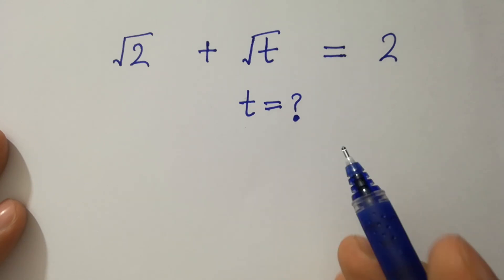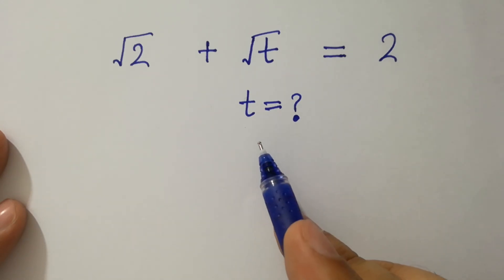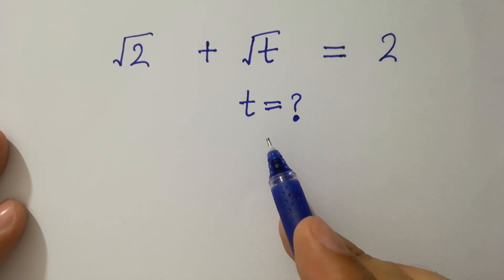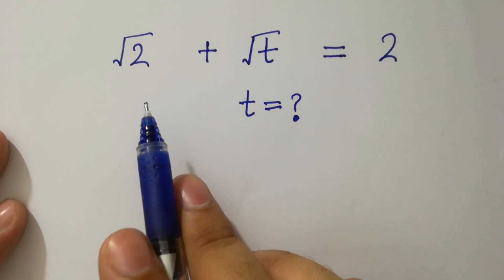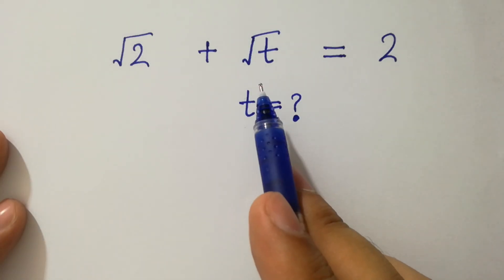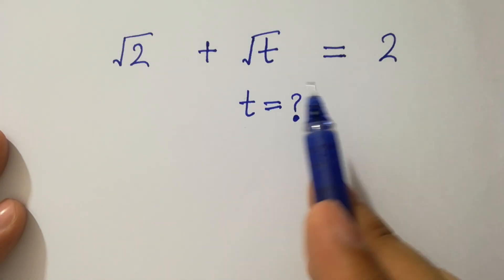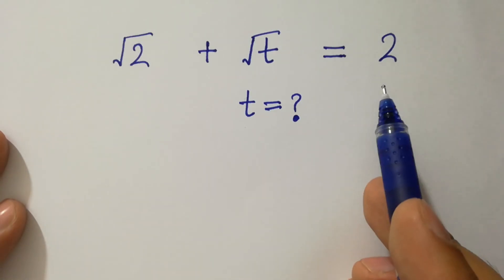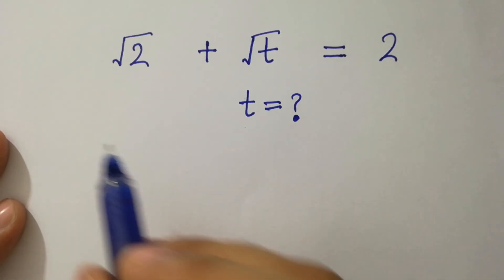Hello friends, find the value of t if square root of 2 plus square root of t equals 2. Let's have a solution.